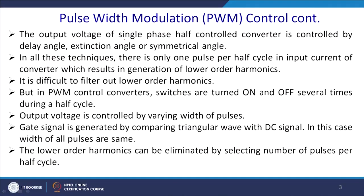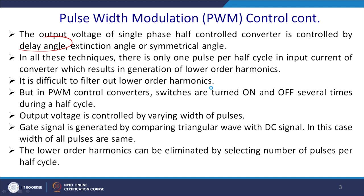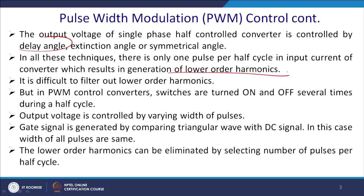These are the key points of the PWM converter. The output voltage of the single-phase half-controlled PWM converter is controlled by delay angle, extinction angle, or symmetrical angle. All these techniques produce only one pulse per half cycle in the input current, resulting in generation of lower-order harmonics, which causes a high THD problem.